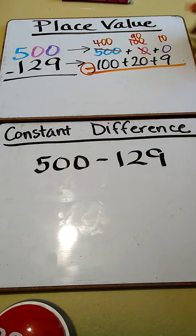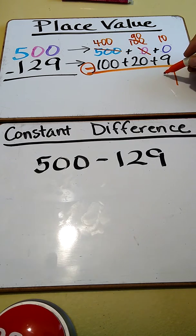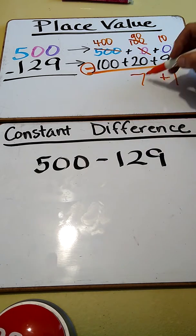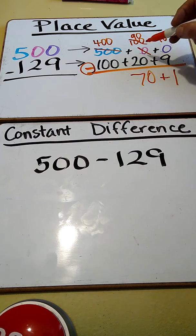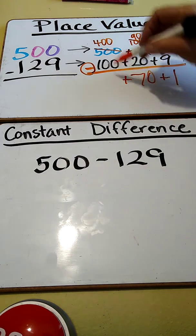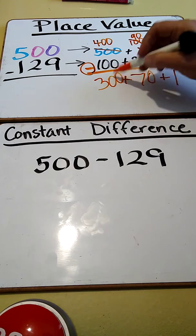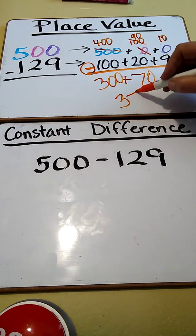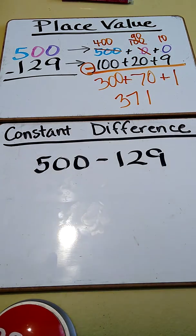Now I can regroup. 10 minus 9 is 1. 90 minus 20 is 70. I know my basic fact of 9 minus 2 is 7. 400 minus 100 is 300. So my answer is 371. So far so good? All right.